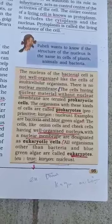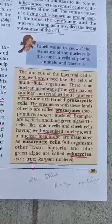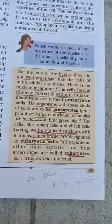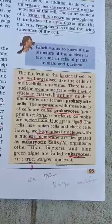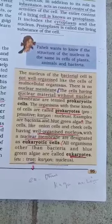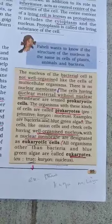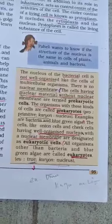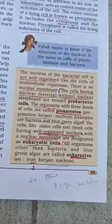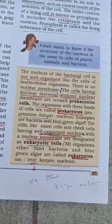Cells that have nuclear material without a nuclear membrane are called prokaryotic cells. The organism which has these kinds of cells is called a prokaryote.